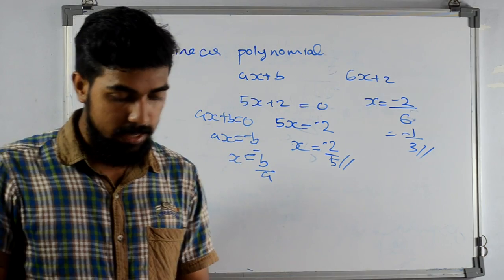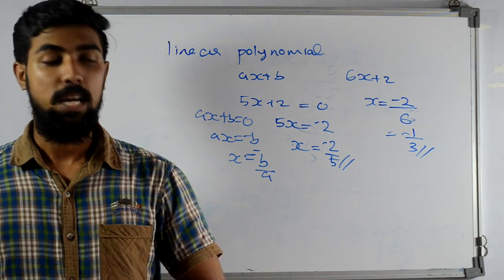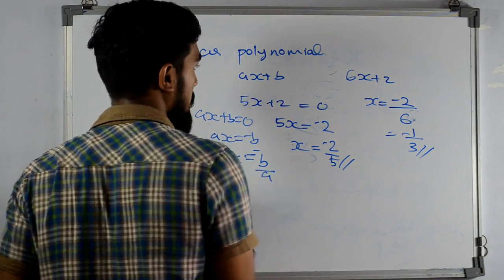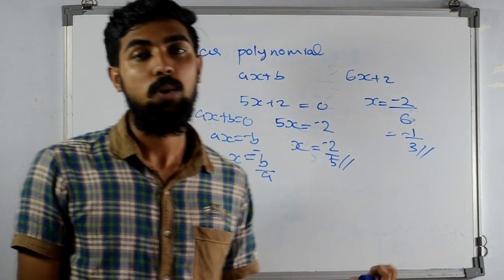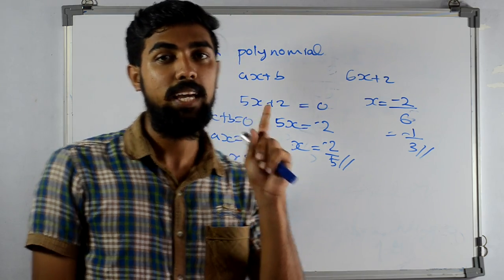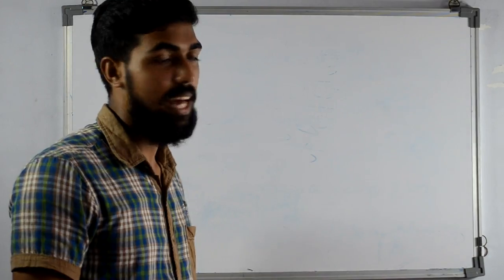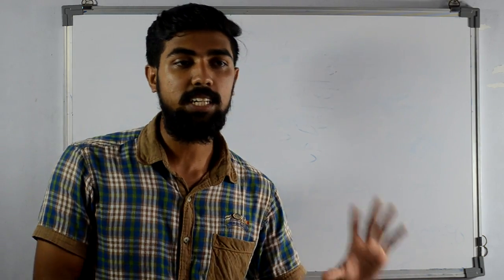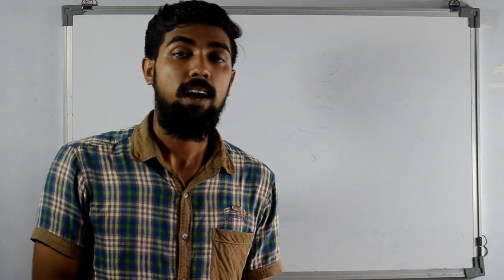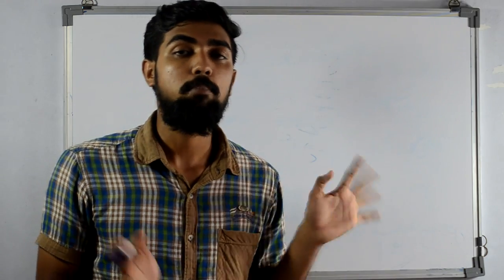Minus b by a. Now we have quadratic polynomials. Let's take a look at the quadratic polynomial. That's the second degree polynomial. The power of x is 2. The degree of a polynomial is the highest power of x. The highest power of x is 2 — that's the quadratic polynomial, the second degree polynomial.